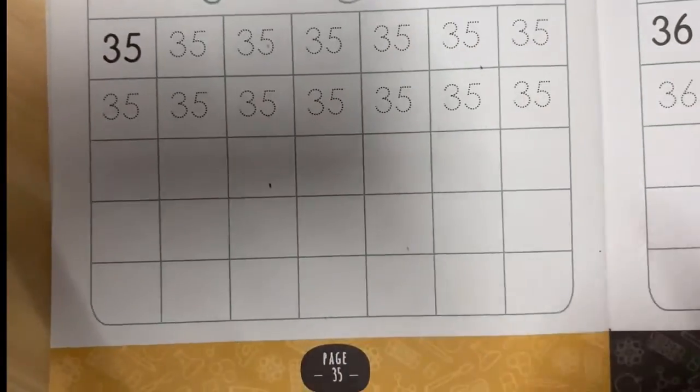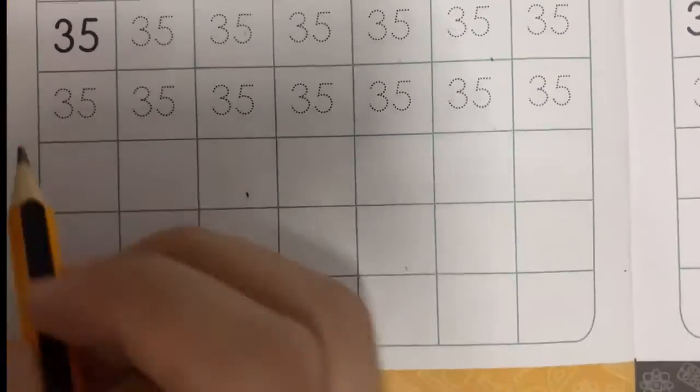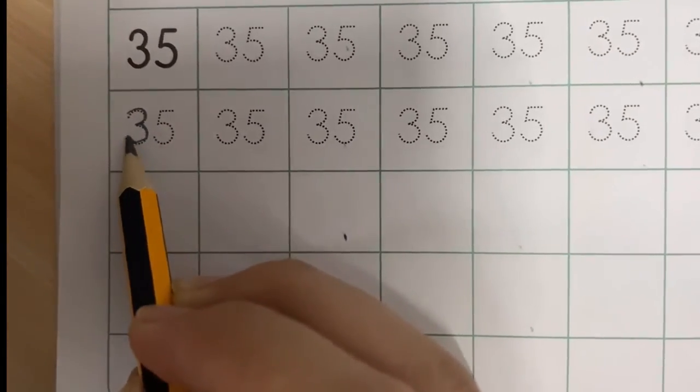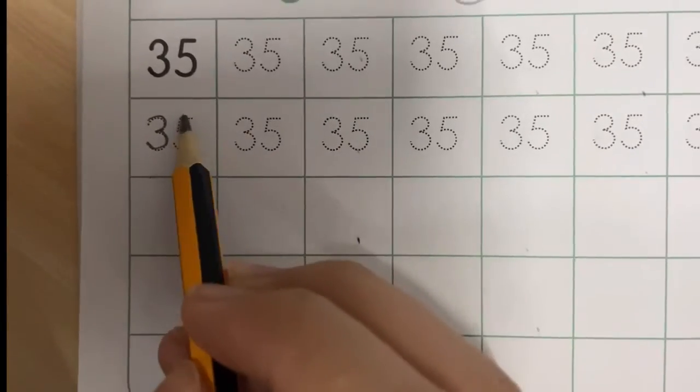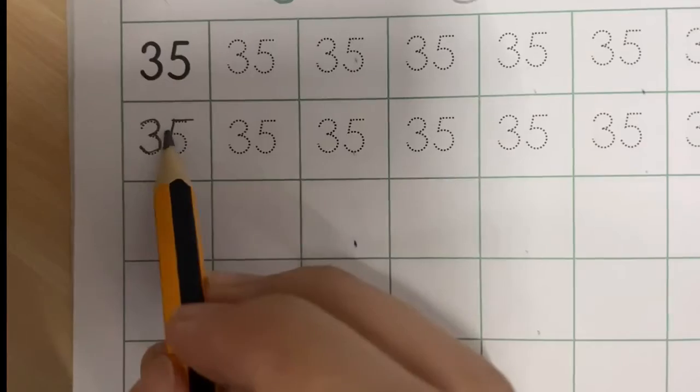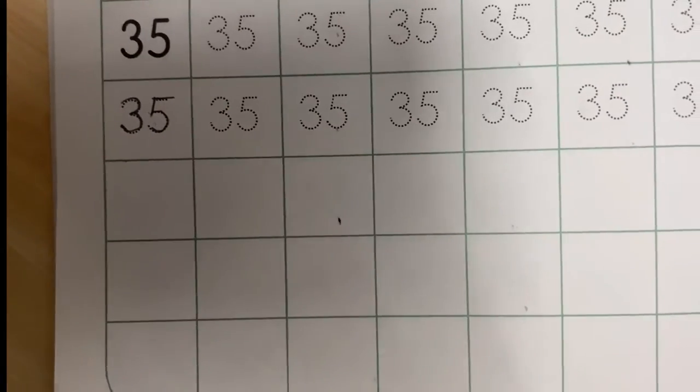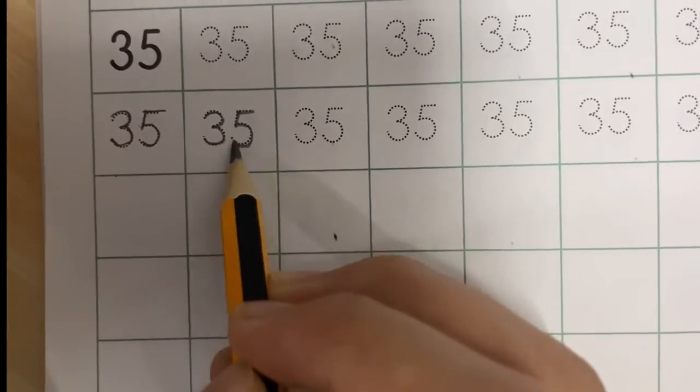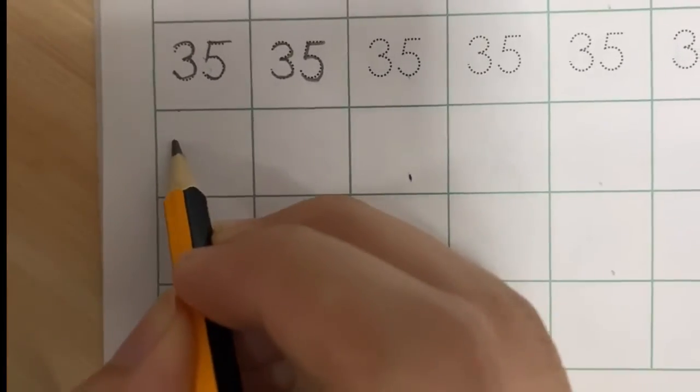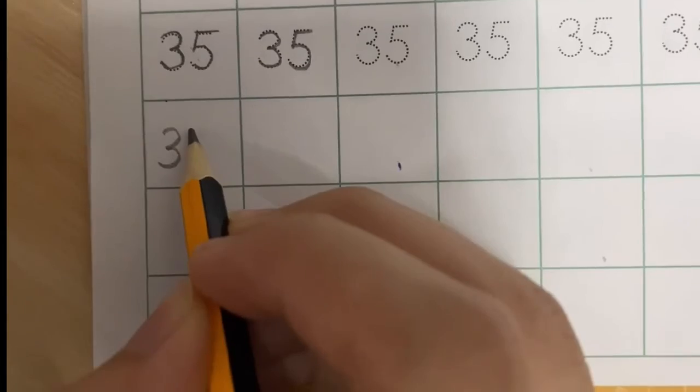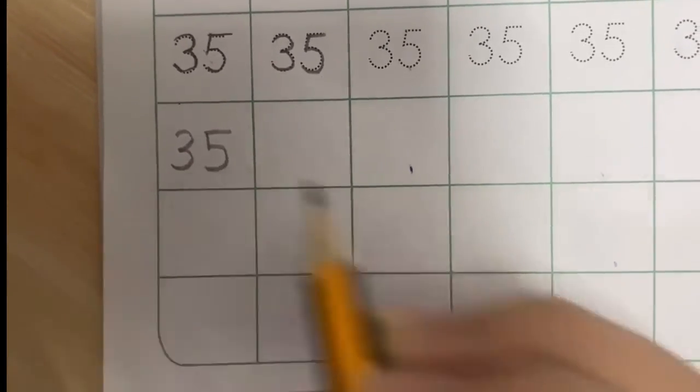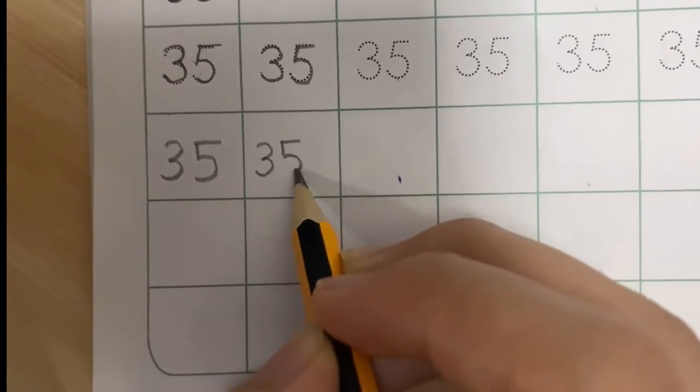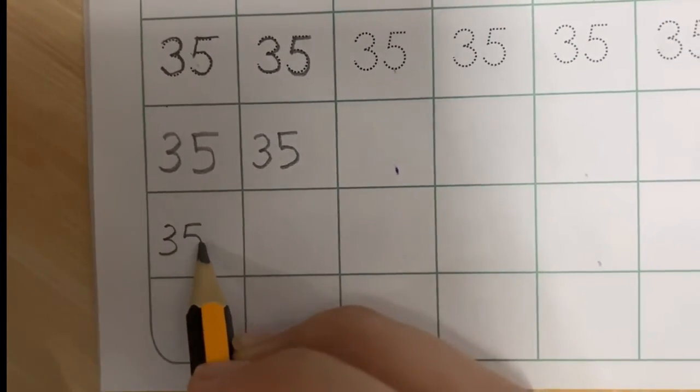Okay, let me show you how to write number 35. First you write number 3, and then how to write number 5: go straight, go down, and make a circle.